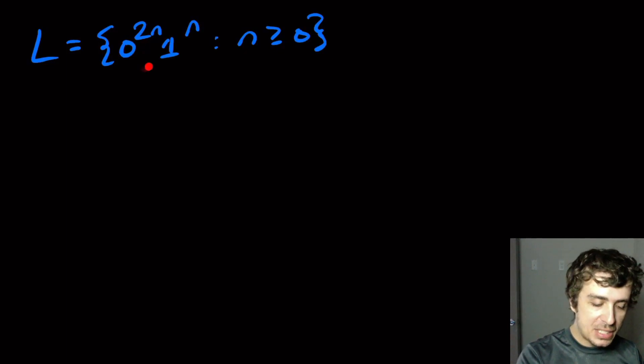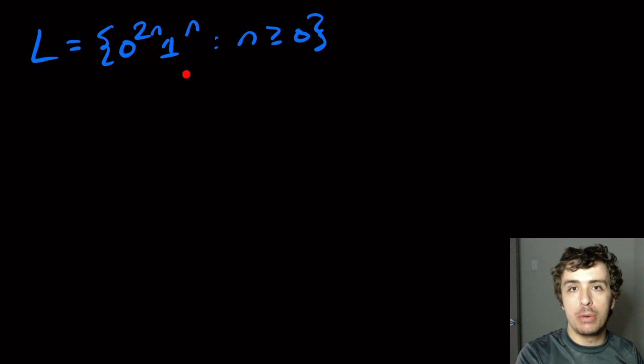Okay, so I want to prove that this language, which is the set of all strings of the form 0 to the 2n, 1 to the n, where n is at least 0, is not regular.